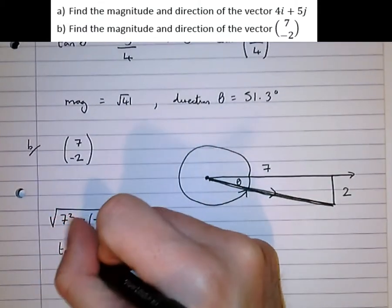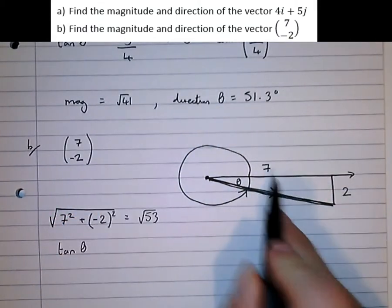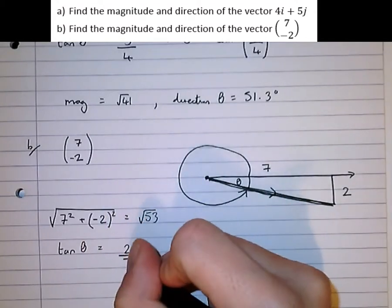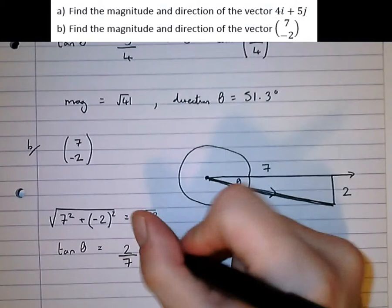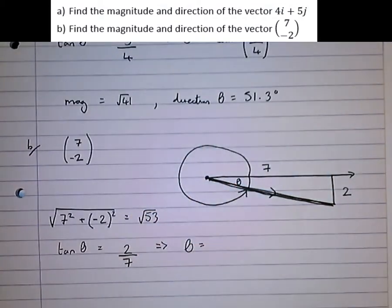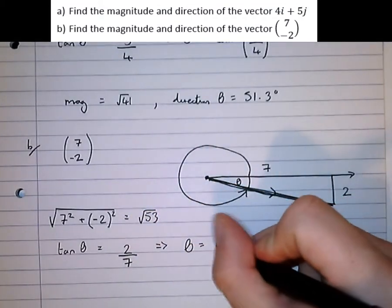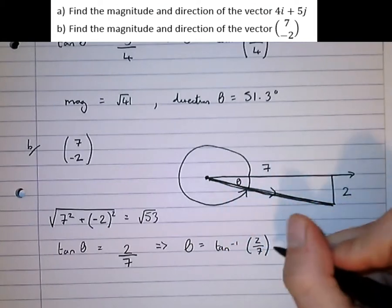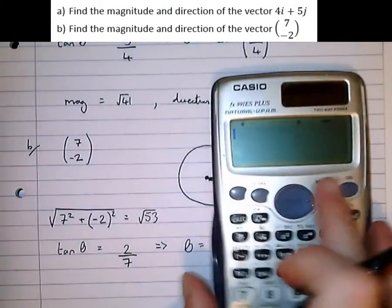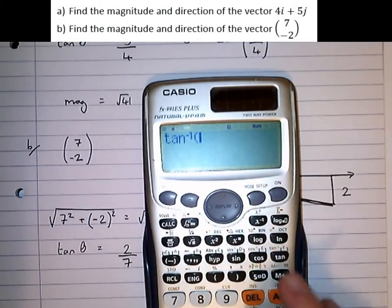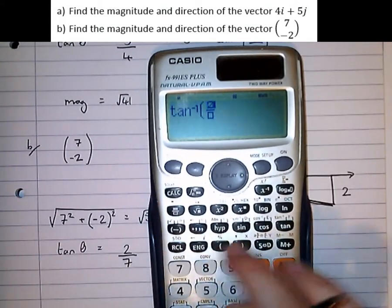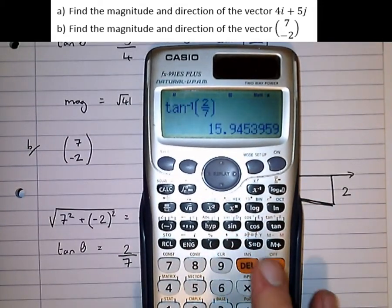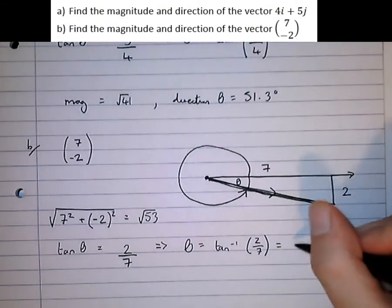So, tan of theta equals the opposite over the adjacent, equals 2 sevenths. Which means that theta equals the inverse tan of 2 sevenths, which is equal to, so the inverse tan of 2 sevenths is equal to 15.9 degrees.